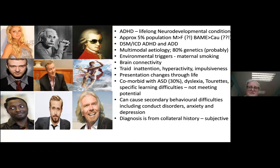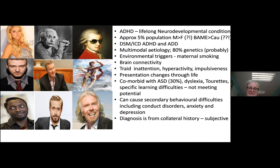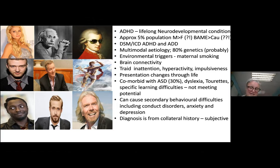So just a little background — it's a lifelong condition affecting about five percent of the population, with a multi-modal aetiology meaning there are lots of different things that contribute. Environmental triggers are important — that's why I ask about maternal smoking and drinking during pregnancy, and I always preface that by saying I don't want anyone to be offended, but they are important. It's comorbid with autism in about 30% of cases, and a number of children will have both. It leads to secondary complicated behaviours, and diagnosis requires collateral — meaning information from as many people as possible.